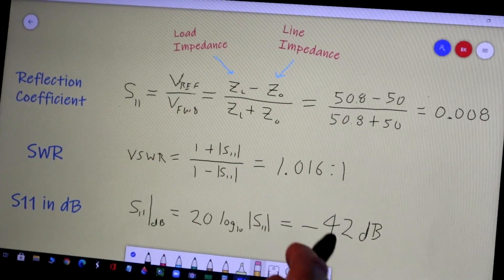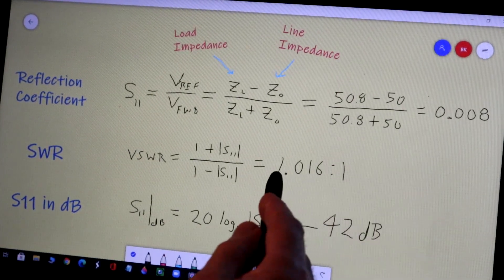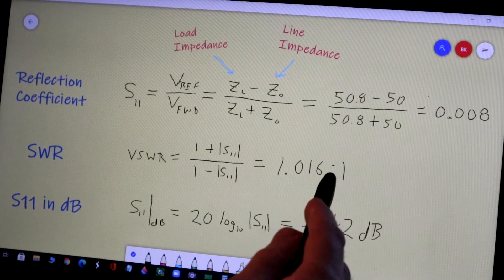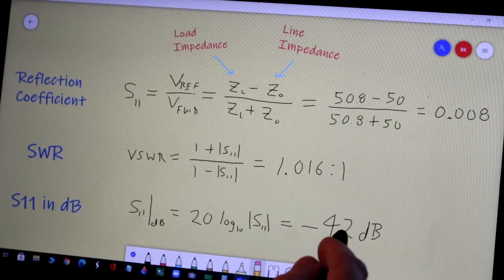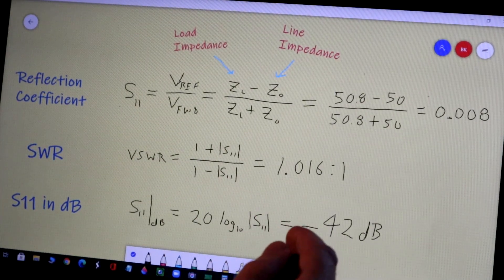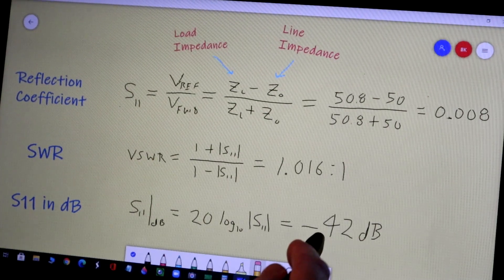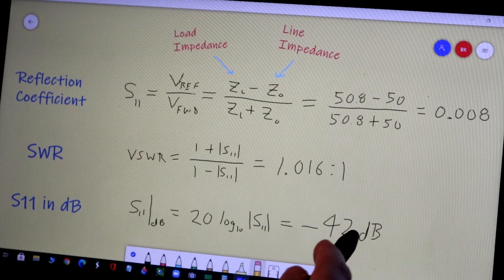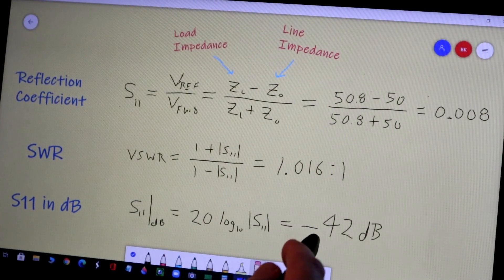That is a really good number. Just like this up here is a really good number and 1.016 to 1 SWR is a good number. Minus 40 dB for S11 is a very good number. Up here we could accept 1.1 or 1.3. Typically for S11 measurements in dB we'll be happy with something like minus 20 dB, but even minus 10 dB can be considered okay in some situations.